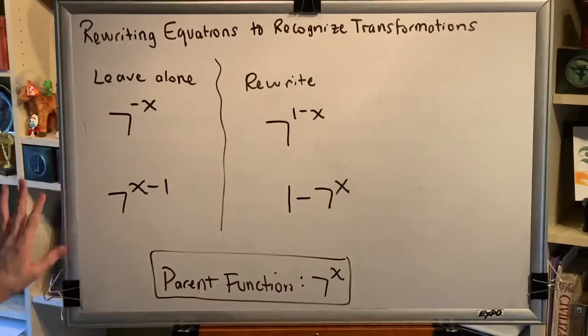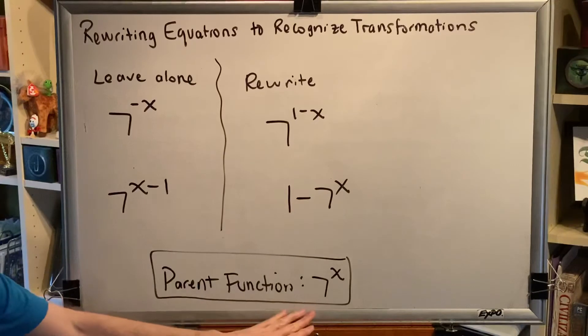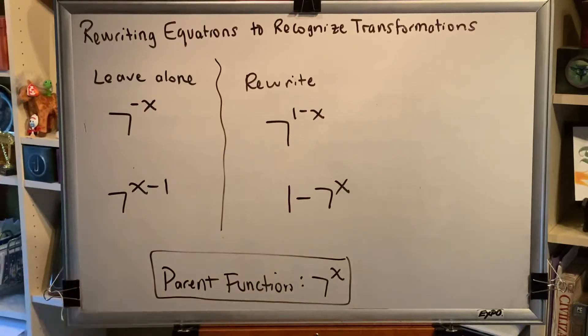For all of the expressions that I have here, the parent function is 7 to the x power, and it's been transformed to make these four expressions. Our job is to figure out what are the transformations.